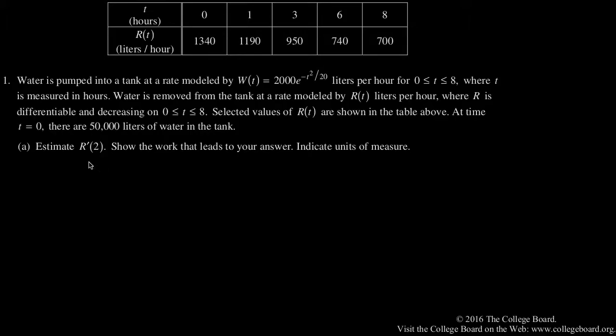Part A wants us to estimate r prime of 2 and show the work that leads to my answer, indicating use of measure. So r is based on this table, and we don't have a function to take a derivative of, we just have specific values. r prime is the instantaneous slope. The best we can do with the table is get the closest secant slope, or average slope.